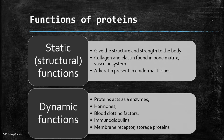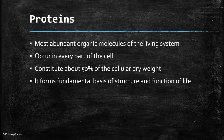The blood clotting factors are also proteins — they cause coagulation. Immunoglobulins, as we saw earlier, are also protein in nature. Membrane receptors function for the movement of ions, and some drug molecules act on these membrane receptors to carry out a cellular response. So these proteins are the most abundant organic molecules of the living system. They occur in every part of the cell and constitute about 50% of the cellular dry weight.